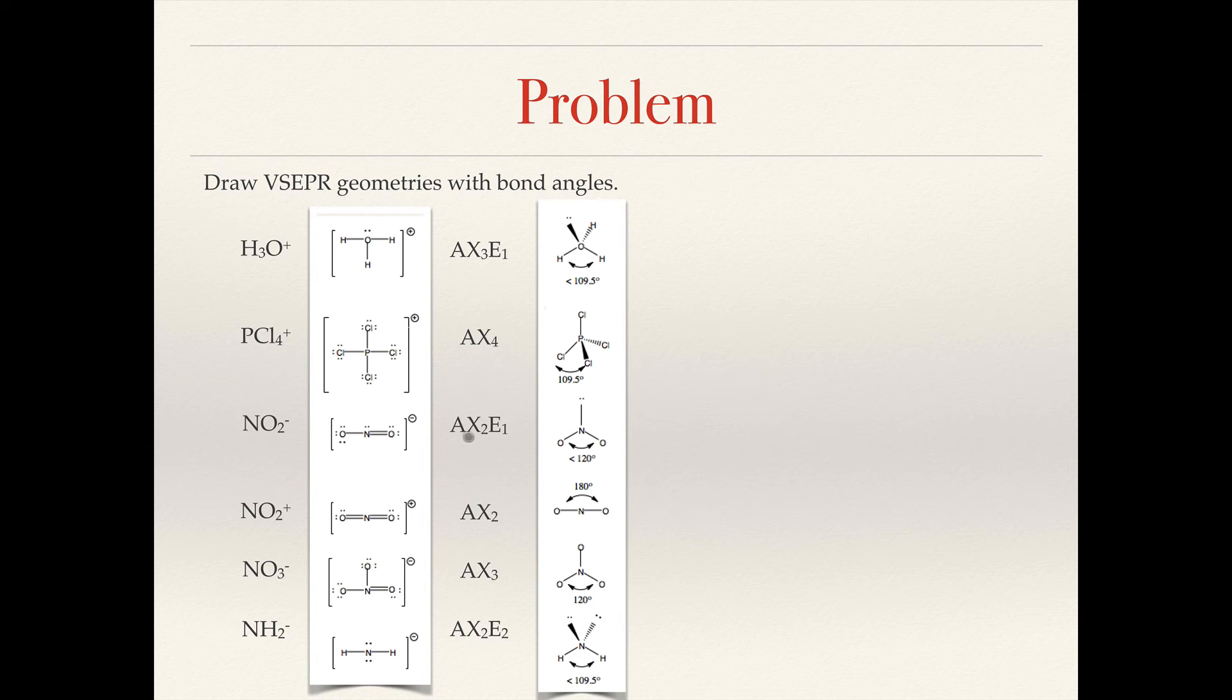For NO2-, this is AX2E1, so it has three electron groups. It should be based on the trigonal planar electron group geometry, but remember, we name it as if the lone pair doesn't exist. So this would be a bent structure, which actually also shares the same structure as the amide anion, NH2-, except different bond angle. Here, the lone pair is going to take up more space than the atom, so it's going to compress this angle. Again, we do not want to provide this angle or this angle because we don't know where the lone pair is. So this would be bent.